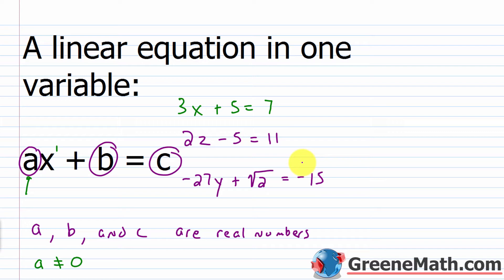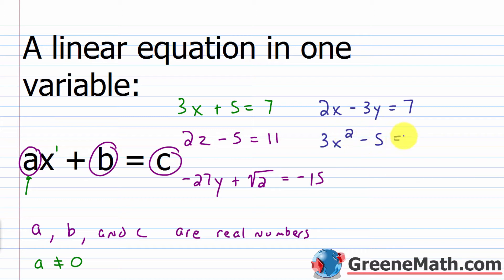Something that wouldn't be a linear equation in one variable: if you had two variables involved, like 2X minus 3Y equals 7. Or something with an exponent on the variable higher than 1, like 3X squared minus 5 equals 2. These two would not be examples of a linear equation in one variable.